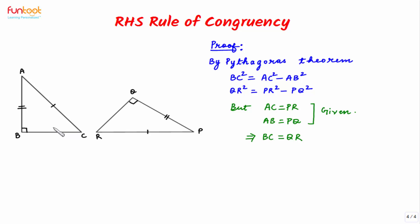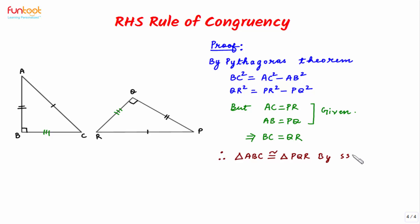What we have proved by application of Pythagoras theorem is that the third pair of sides is also equal. Now in triangles ABC and PQR, all three corresponding pairs of sides are equal. Therefore, triangle ABC is congruent to triangle PQR by SSS congruency rule. This is the proof for RHS rule of congruency.